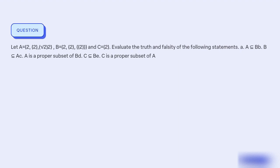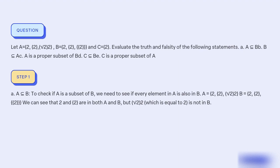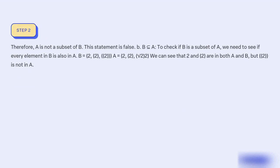Our objective is to determine the truth or falsity of statements regarding the subsets of B and C. To check if A is a subset of B, we need to see if every element in A is also in B. A equals {2, √2} and B equals {2, 2, 2}. We can see that 2 is in both A and B, but √2 is not in B. Therefore, A is not a subset of B. This statement is false.